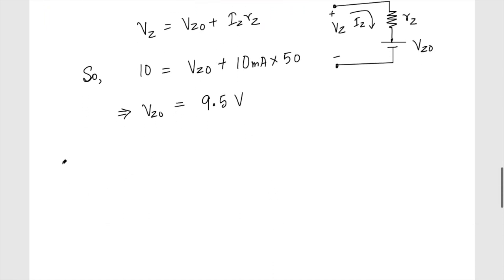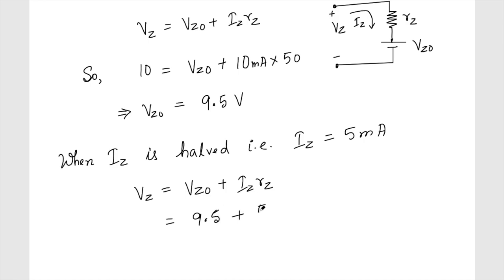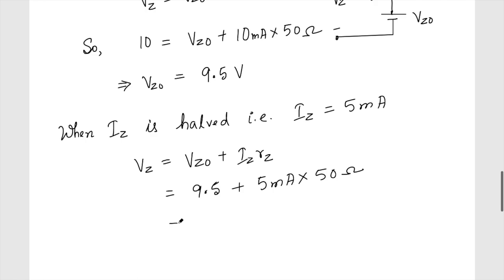When the current is half, iz equals 5 milliampere. Then vz equals vz0 plus iz times rz equals 9.5 plus 5 milliampere times 50 ohms. The product is 250 millivolts, so vz equals 9.75 volts. We must be careful to keep units consistent, converting milliampere times ohms to millivolts before adding to the voltage.